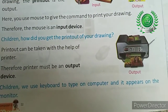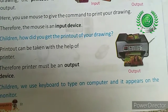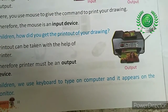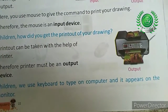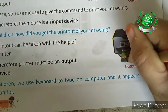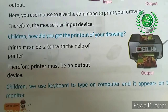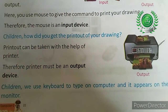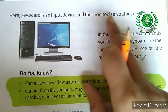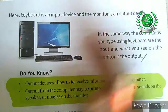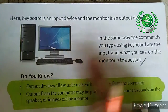Whatever you type, you show it on your monitor. So typing is our input and what we are showing on the monitor is our output. The keyboard is our input device and the monitor is our output device. Remember that: keyboard is an input device and the monitor is an output device.